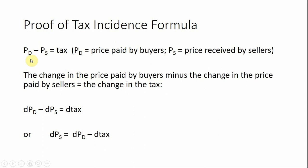We'll start by recognizing that a tax creates a wedge between what buyers pay and what sellers receive. The change in the price paid by buyers minus the change in the price received by sellers equals the change in the tax. Mathematically, we can write this in calculus format. And if we solve for the change in the price received by sellers by manipulating this equation, we get that result.